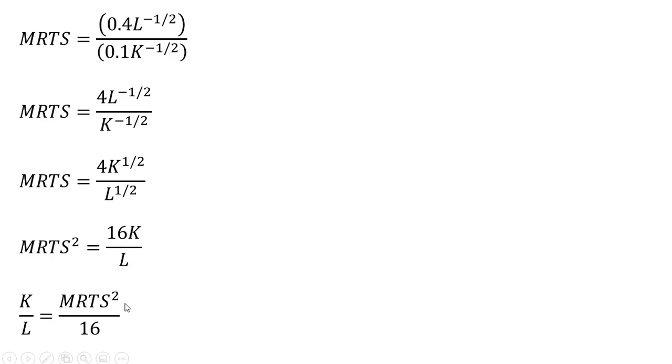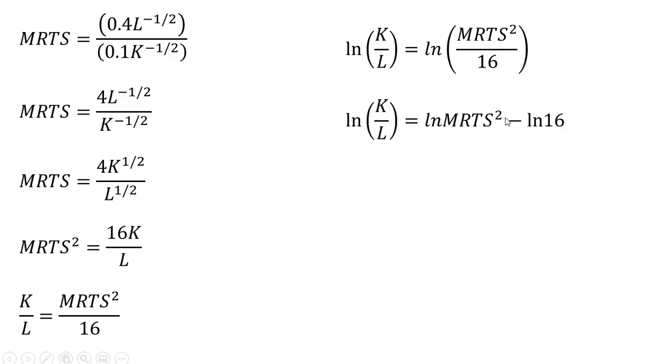Now we take the natural log of both sides. On the right-hand side, we follow the rules of natural logs. We can bring the 2 down in front to get ln(K/L) = 2lnMRTS - ln16.